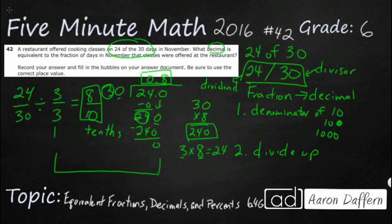And then, we would simply just need to bubble this in on our bubble sheet here. We've got a decimal. There's two decimal places, and they go up to the thousandths place. So, we would just put a 0 here, and we would put an 8 in the 10ths place.